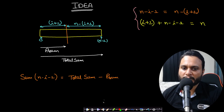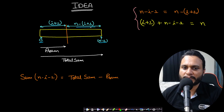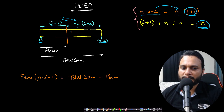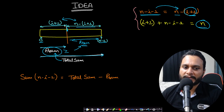Having understood the problem, let's look at the optimal idea. For an array from index 0 to n minus 1, at any split point i, there are i plus 1 elements on the left and n minus i minus 1 elements on the right — these always sum to n. According to the problem, if we compute the prefix sum up to index i and know the total sum, the right-hand side sum is simply total sum minus prefix sum. If the prefix sum is greater than or equal to the right-hand side sum, index i is a valid split. This is the core idea.